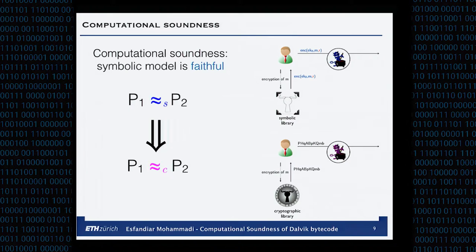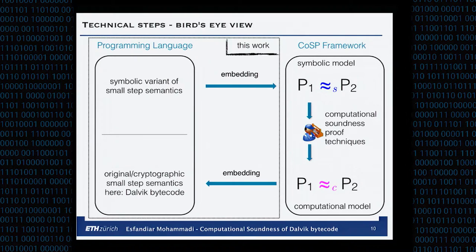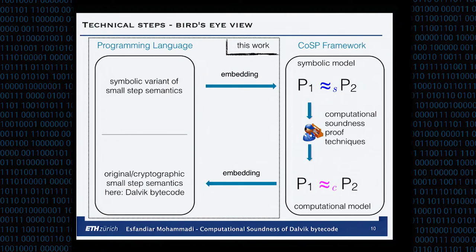Computational soundness is what we consider faithful: if we have symbolic equivalence of two programs, we also have computational indistinguishability of two programs. We work with the COSP framework, which gives you these symbolic models and defines the computational attacker. The programming language is basically embedded into this COSP framework — that's what we do in this work. We take the Dalvik semantics, get a symbolic model from COSP, and our result is parametric in the symbolic model. We give you a symbolic variant of Dalvik that is computationally sound via a commuting diagram.